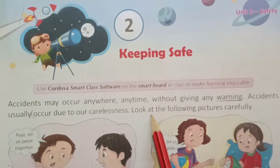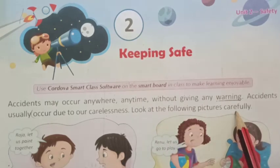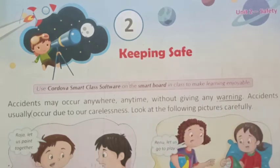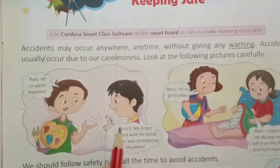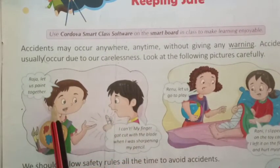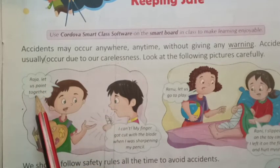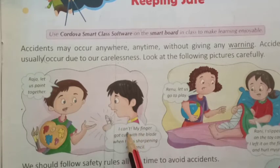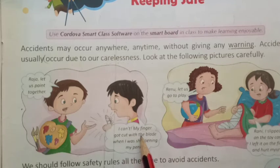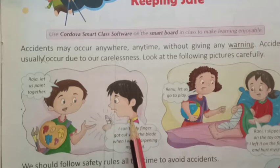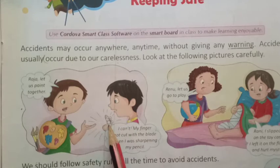Look at the following pictures carefully. Let us read what these two children are talking. Raja, let us paint together. The second boy says, I can't. My finger got cut with the blade when I was sharpening my pencil. So this boy was not careful when he was sharpening his pencil and so he has a cut on his finger.